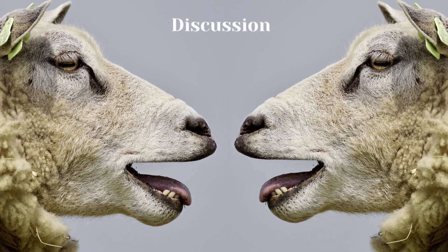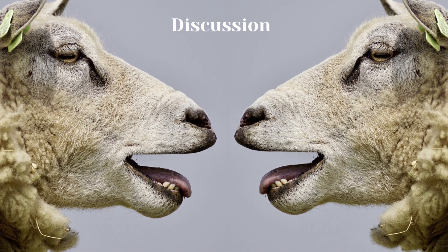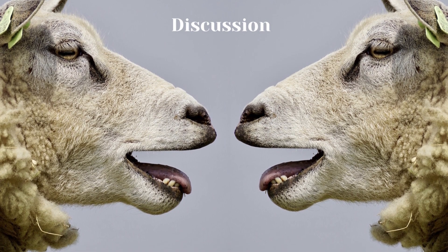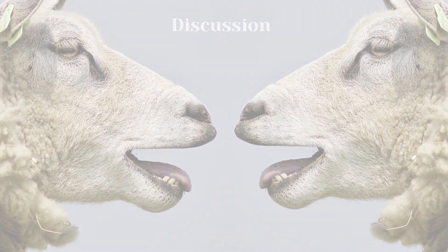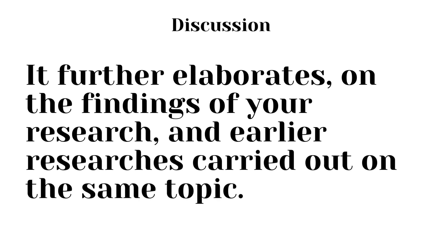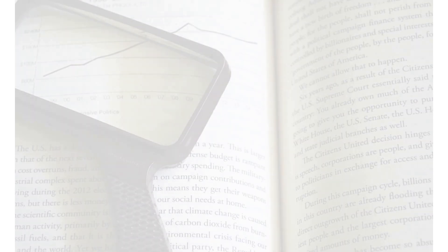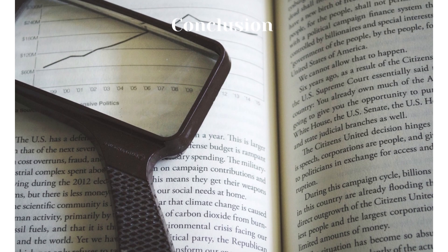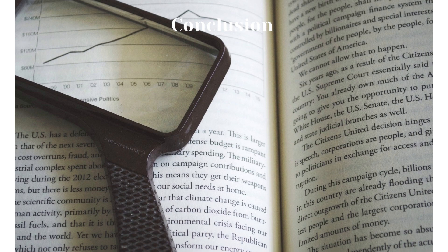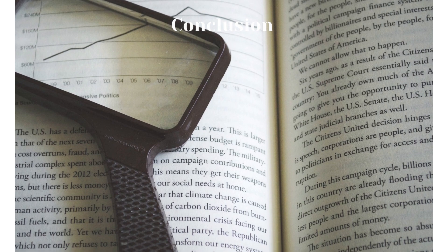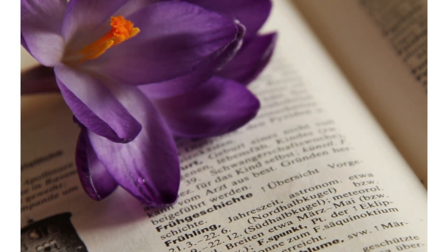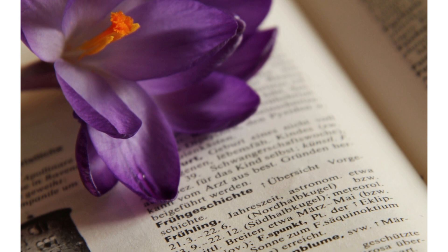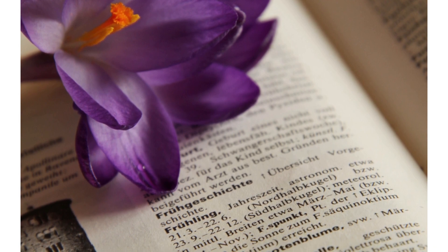Seventh part is discussion, which contains the discussion of the findings, literature review, and results section. It further elaborates on the findings of your research and earlier researches carried out on the same topic. Finally, a conclusion is provided that simply summarizes the findings and their significance for future research. A reference list is also provided to credit the sources used to write the research paper.